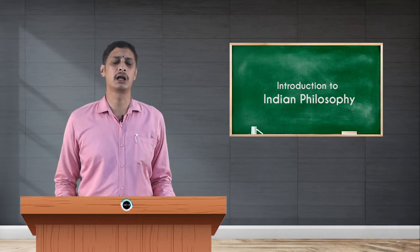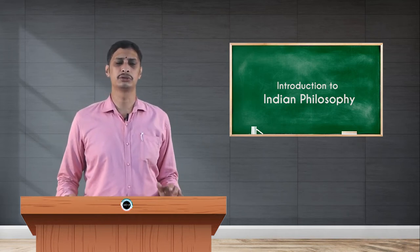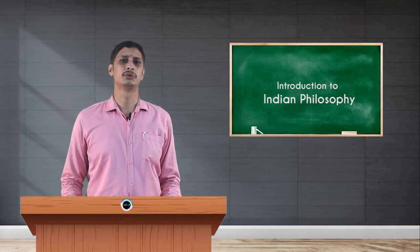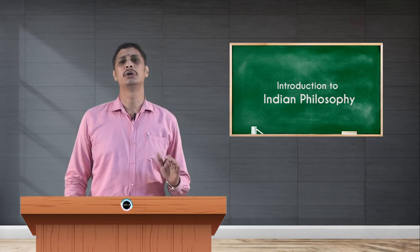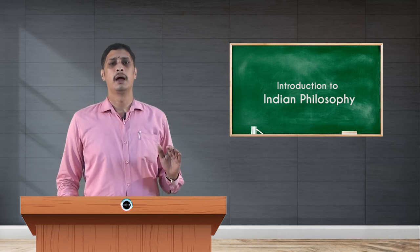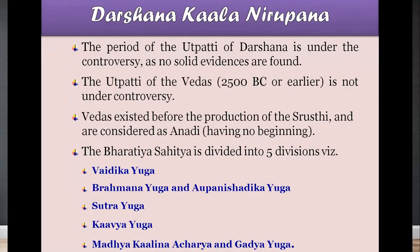The Sutras are six, corresponding to the six Darsanas: Nyaya Sutra, Vaisheshika Sutra, Yoga Sutra, Sankhya Sutra, Mimamsa Sutra, and Vedanta Sutra — that is Sutra Yuga. Then came Kavya Yuga, where great Kavyas were authored by great personalities such as Kaviratna Kalidasa, Bana, and Bharavi.